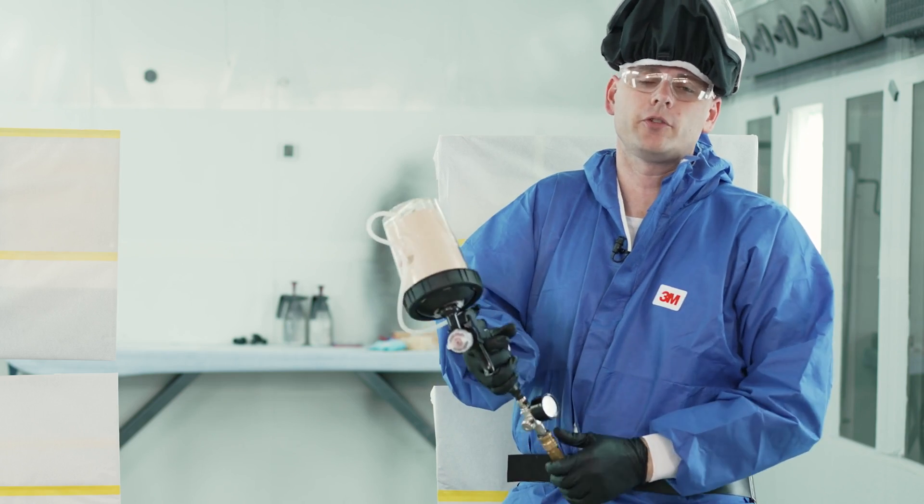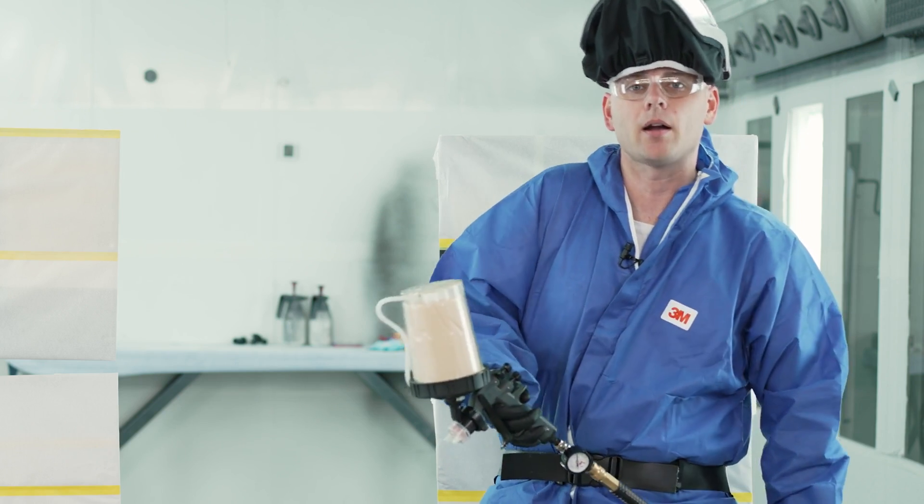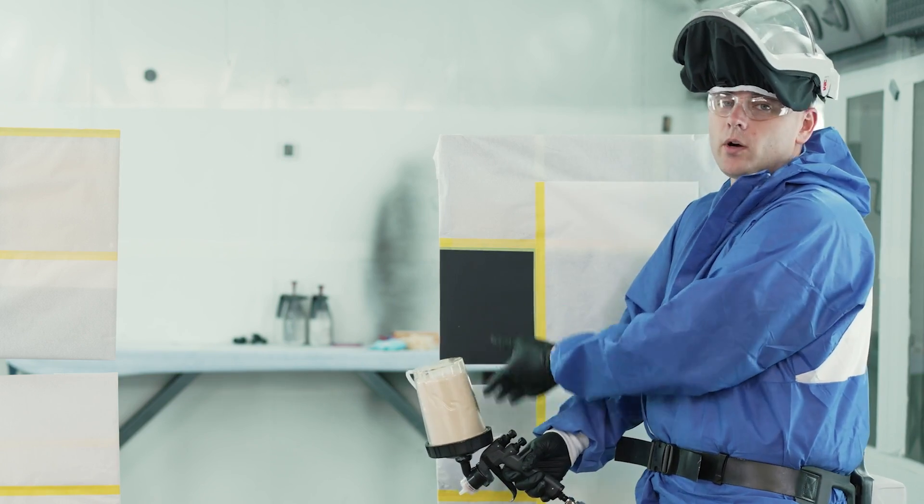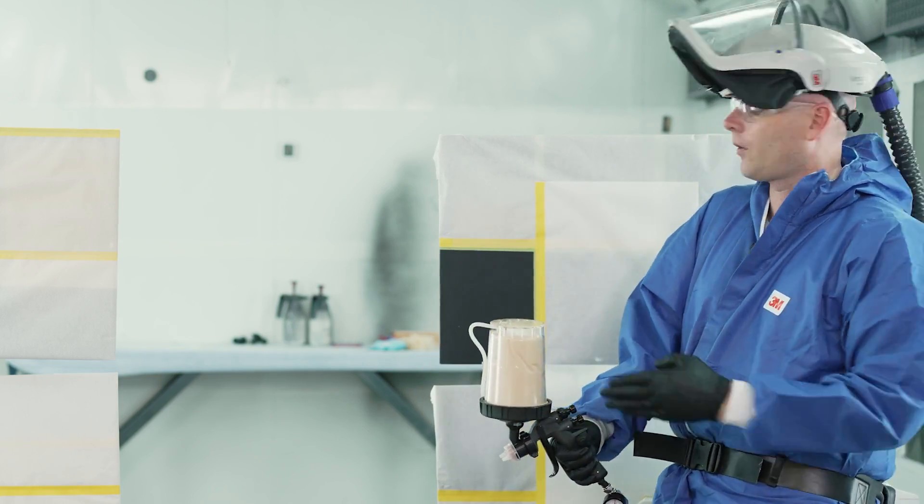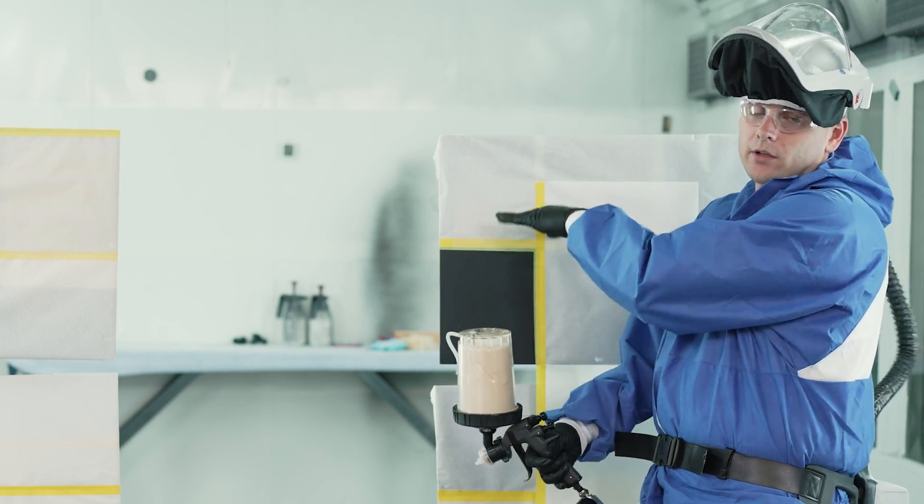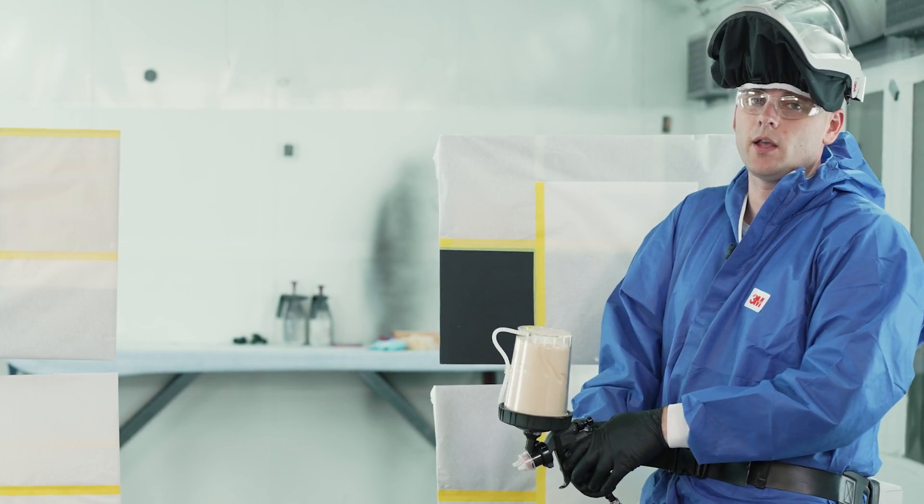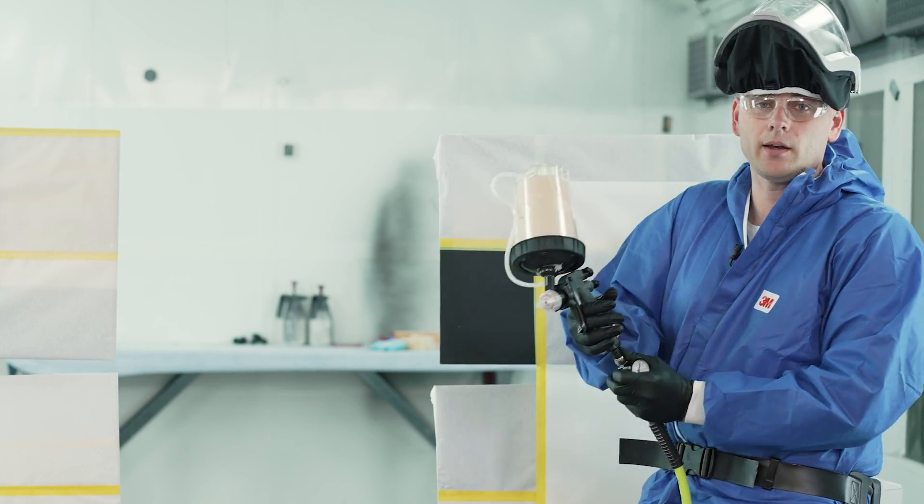So the first method I'm going to show you for doing this is sort of a bottom-up method. And what I mean by bottom-up is we're going to be starting at the bottom of our panel and working into our transition. This is usually done in multiple coats, so you can go from more coverage to less coverage until you get the transition that you want. We're going to go ahead and get this sprayed.